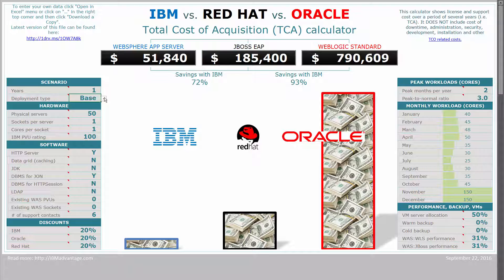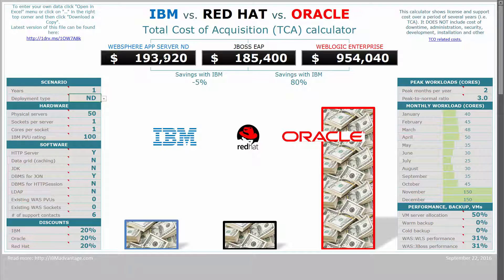That's where you can see the difference: WebSphere Base comes in at $51,000 for that one year, and JBoss EAP at $185,000. Now if we switch to WASND — I go to this cell and configure WASND — it's going to cost $193,000 for this configuration, versus JBoss at $185,000. So these are very, very similar in price, yet with WASND you get a more mature product with intelligent management, version deployment of multiple application versions, health management, and dynamic clustering — lots of features you don't get with JBoss EAP.